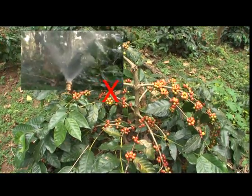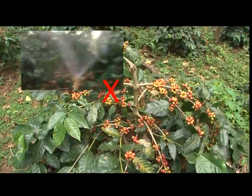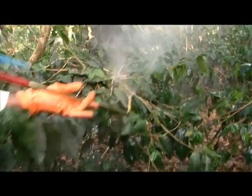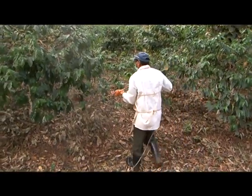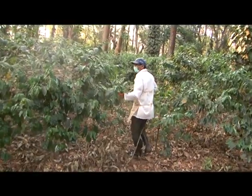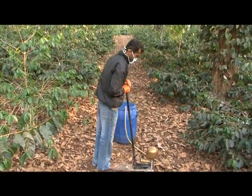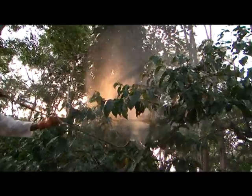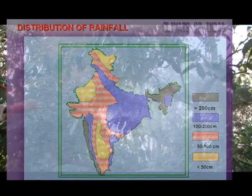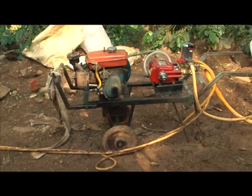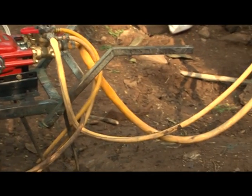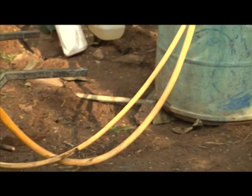As systemic fungicides are used during the post-monsoon period, strictly avoid usage at the time of fruit ripening to prevent the possibility of fungicide residues in the coffee beans. In spite of the availability of very efficient integrated rust management strategies, coffee planters are experiencing difficulties in rust management due to shortage of labor. Sometimes timely application of prophylactic Bordeaux mixture could not be taken up due to change in rainfall patterns. Because of these constraints, a few coffee growers are trying to adopt mechanization of spray operations, and some enterprising growers have developed innovative spraying equipment.